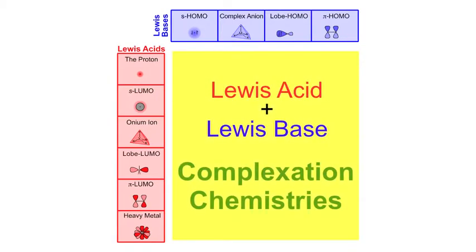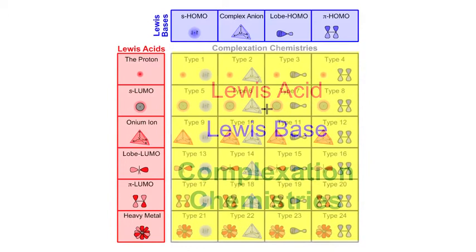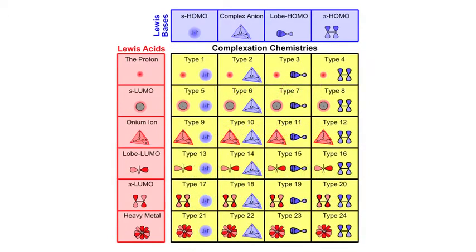As we know, a Lewis acid plus a Lewis base gives a Lewis acid base complex. Therefore, our 4 types of Lewis base and 6 types of Lewis acid can give an array of 24 types of complexation chemistry.